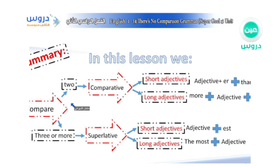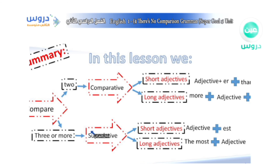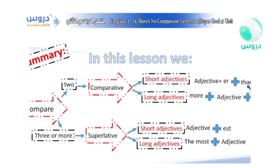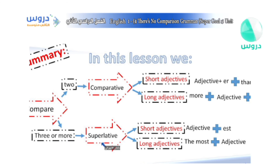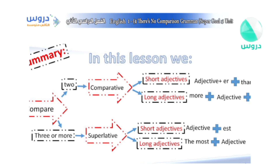This is the summary of our lesson. If you want to take a screenshot, please save it. To compare between two: use the comparative — short adjective + -er + than; long adjective: more + adjective + than. To compare three or more: use the superlative — short adjective + -est; long adjective: the most + adjective. Thank you very much for being with me. I hope to see you next time. Goodbye everyone.